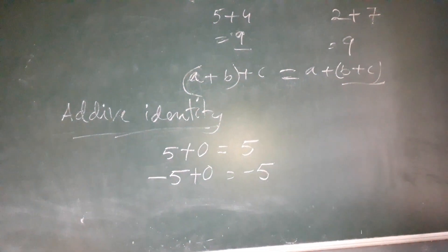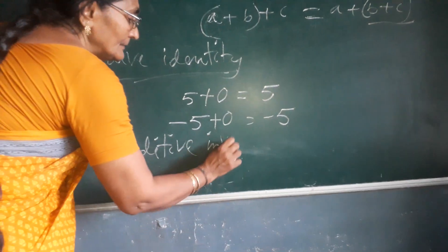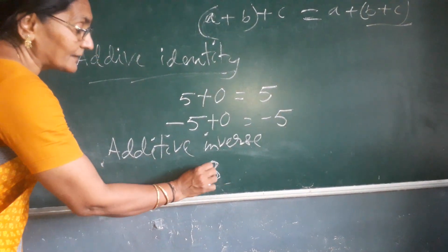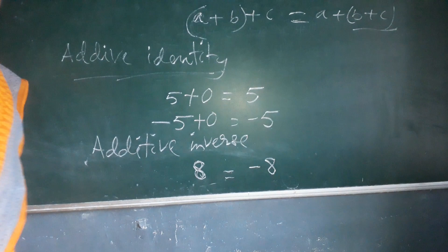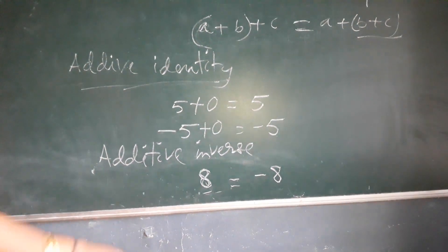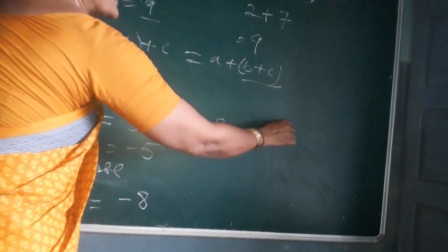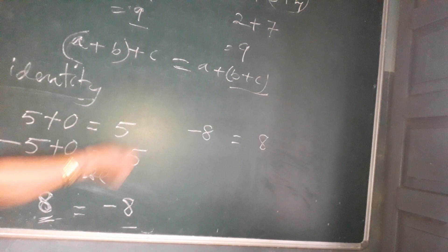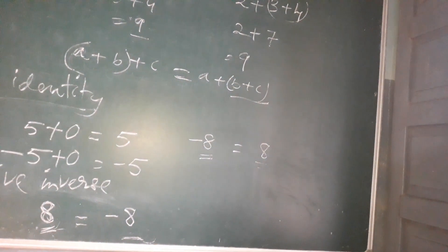Another property is additive inverse. What is additive inverse? The additive inverse of integer eight is minus eight. And the additive inverse of minus eight is eight. Inverse means the opposite will come — if the integer is positive, it becomes negative; if negative, it becomes positive. This is the property of additive inverse.